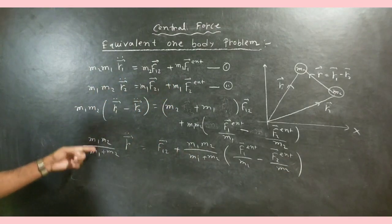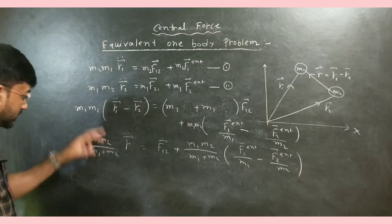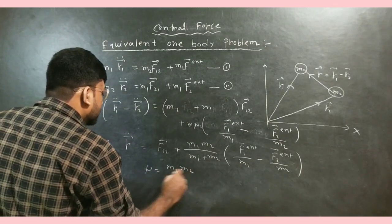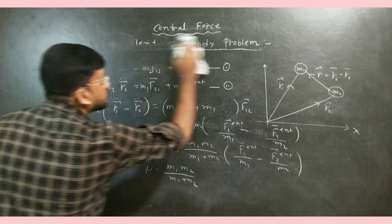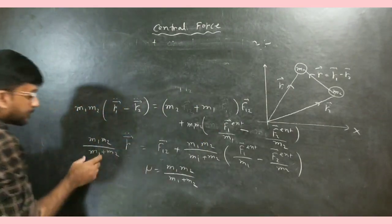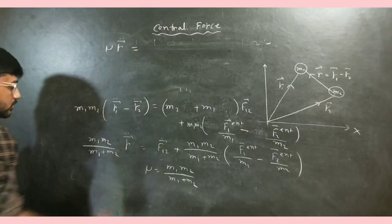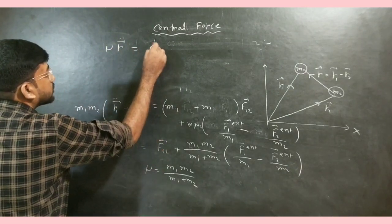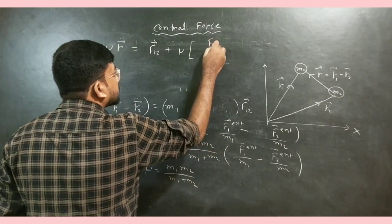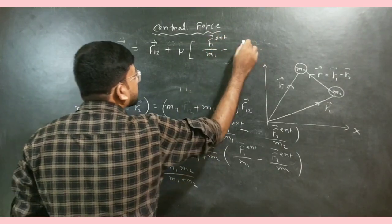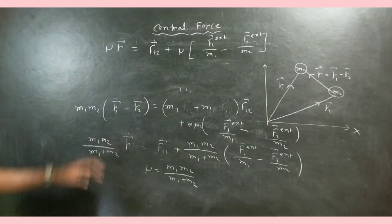Now let us define the reduced mass μ as M1M2 divided by (M1 plus M2). With this substitution our equation takes a very simplified form: μ R-double-dot equals F12 plus μ times (F1-external/M1 minus F2-external/M2). This is our final equation.